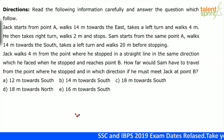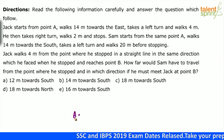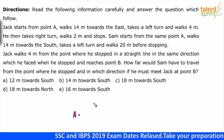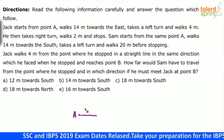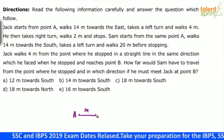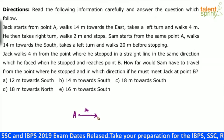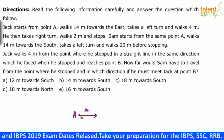Let us say this is point A. So Jack starts from point A, walks 14 meters towards east — 14 meters towards east — then takes a left turn.